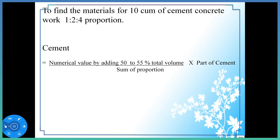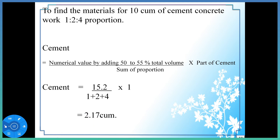This is the total volume of 10 cubic meters. So, this is the quantity for cement: 2.17 cubic meters.